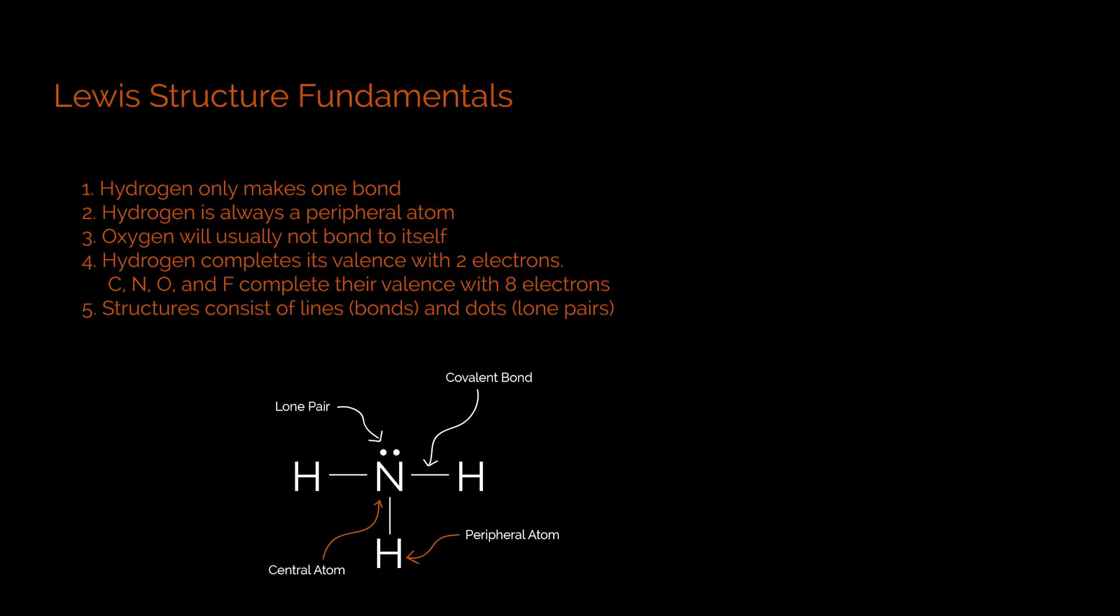Rule number four is that hydrogen only wants two electrons to fill its valence shell, whereas the common elements carbon, nitrogen, oxygen, and fluorine are going to require eight electrons. Now that rule kind of carries over to other elements, especially when dealing with peripheral atoms, but later on when we draw more advanced Lewis structures, you're going to see that that can kind of break down. You can have more than eight electrons surrounding elements as long as they have access to the d orbitals.